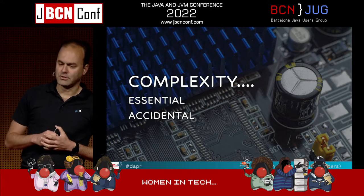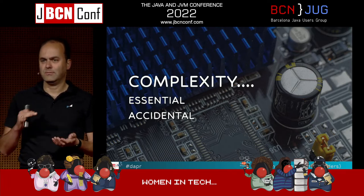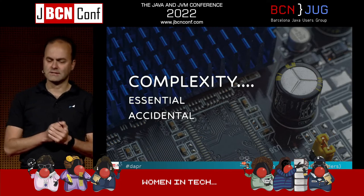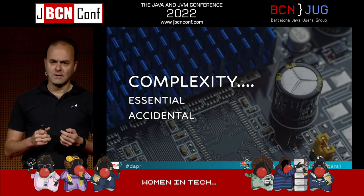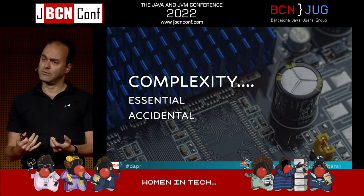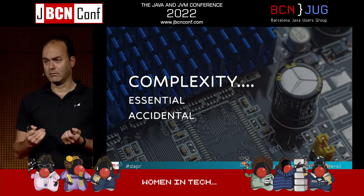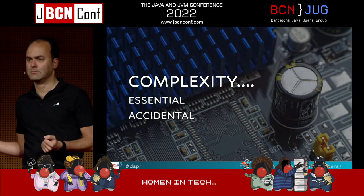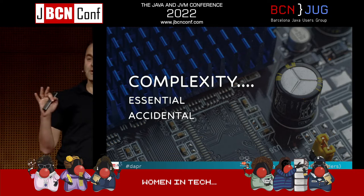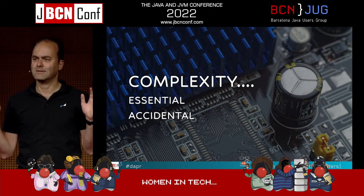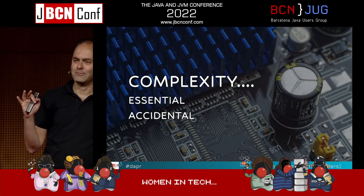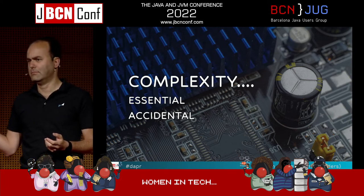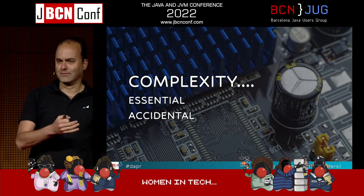The less interesting part, at least in my opinion, is accidental complexity — the complexity that we introduce ourselves. Because without even quite knowing what we're going to build, we've already decided, 'Oh yeah, let's use Kubernetes.' And Kubernetes is simple, I know. Or is it? And we decided to go for microservices, because that's how you do it these days. And microservices are simple. Well, you get it already.